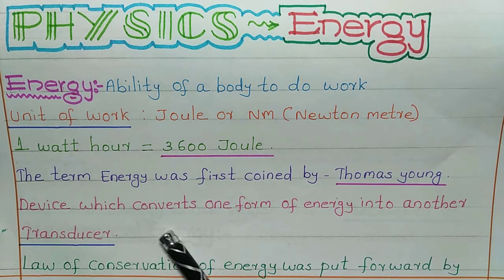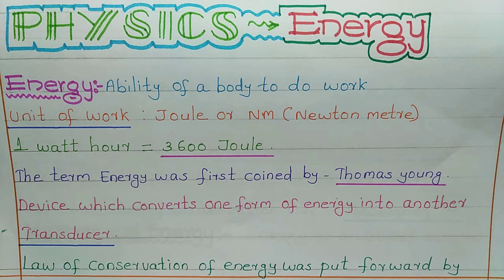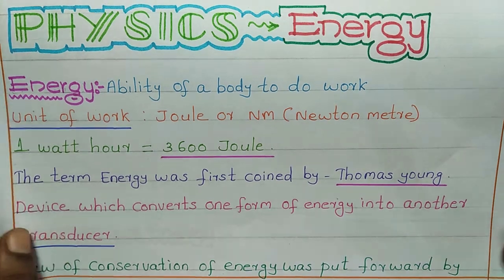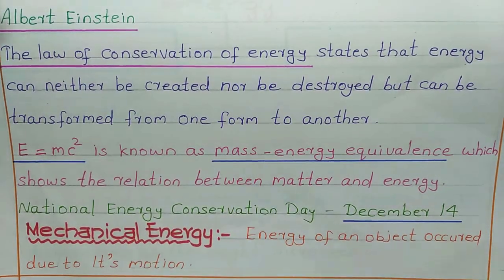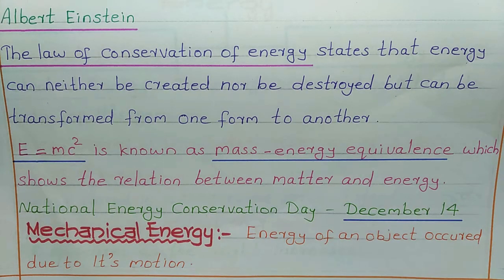A transducer is the device which converts one form of energy into another. The law of conservation of energy was put forward by Albert Einstein — he is the scientist who put forward the law of conservation of energy.